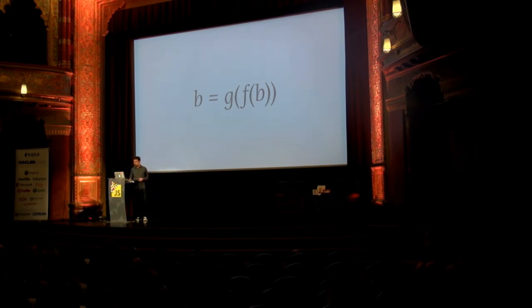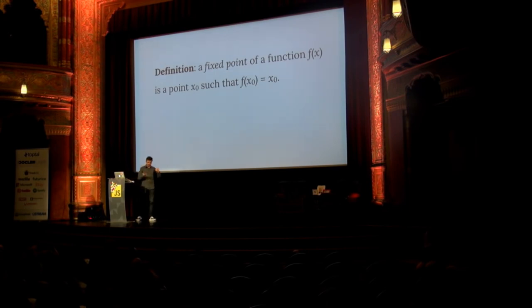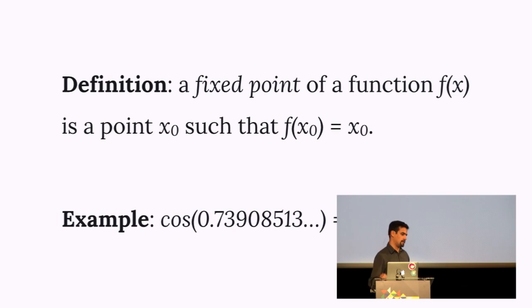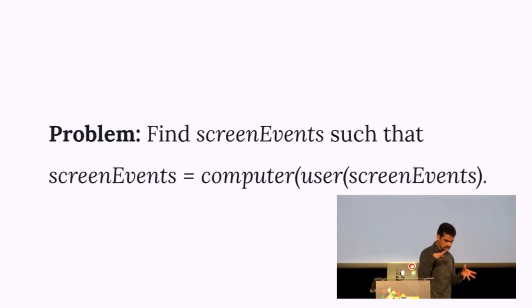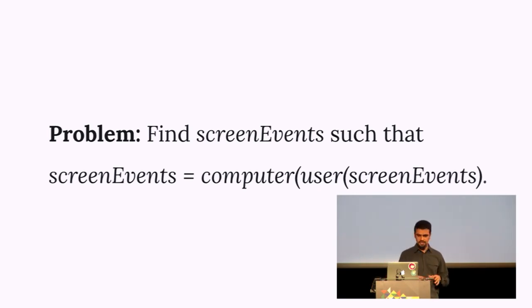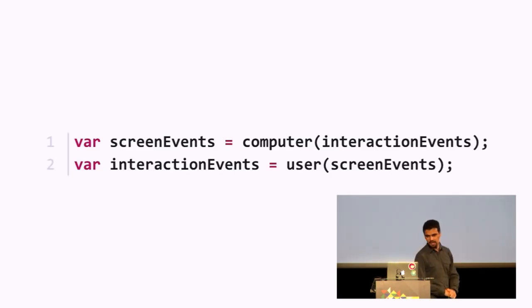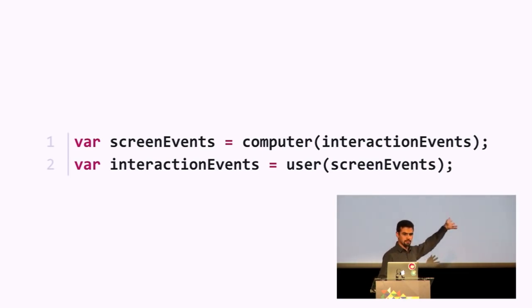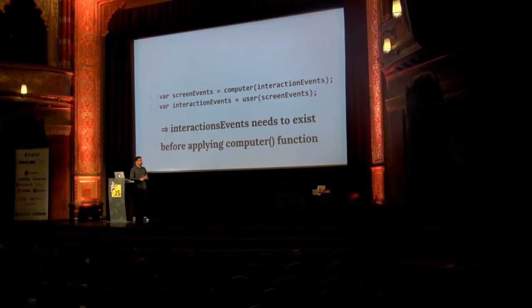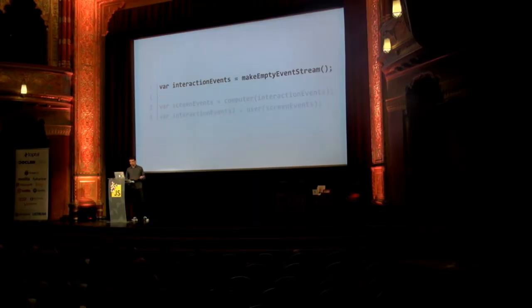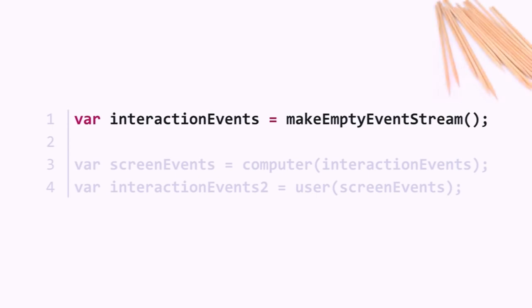What if our problem is to discover the event stream that satisfies this equation? Let's forget assignment and consider equality — use mathematics as inspiration. Back in JavaScript, assignment won't help us. The first line needs to exist before we call the computer function. So what if we just declare interaction events as an empty event stream first — an empty fruit skewer with nothing on it. Now that it's available, we call the computer function on it and get screen events as output.